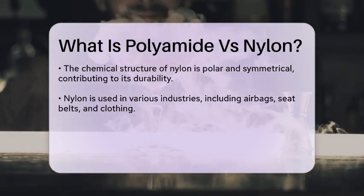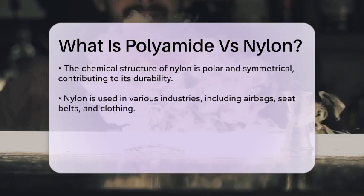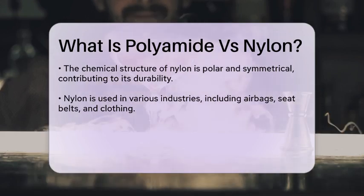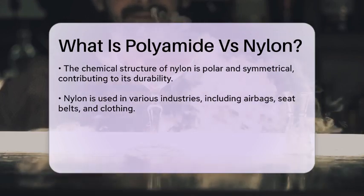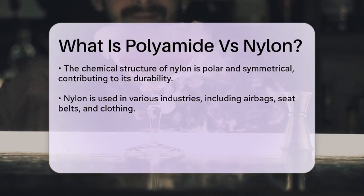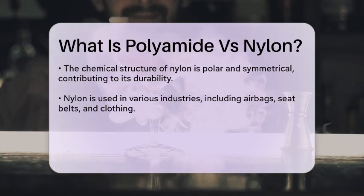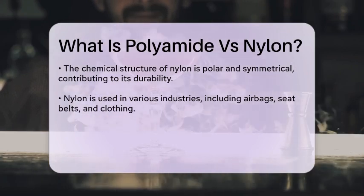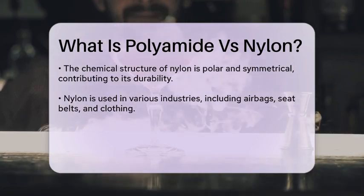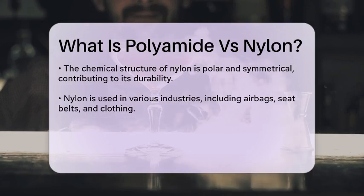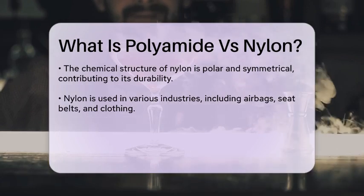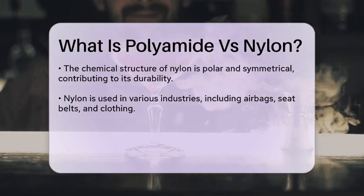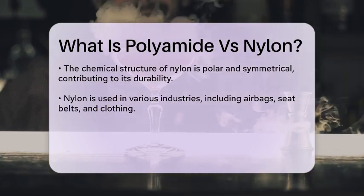High-strength polyamides, such as Kevlar, are different from standard nylons. Kevlar has a much higher tensile strength and is often used in applications requiring exceptional strength and heat resistance, like body armor and high-performance tires.